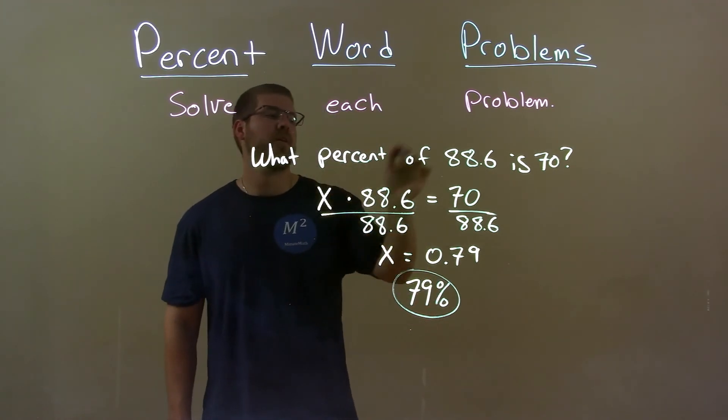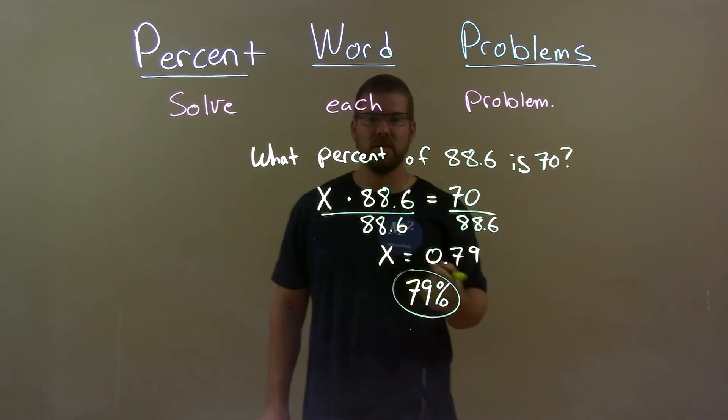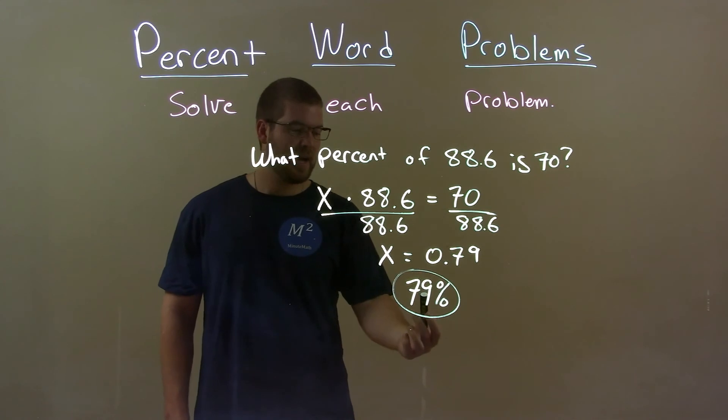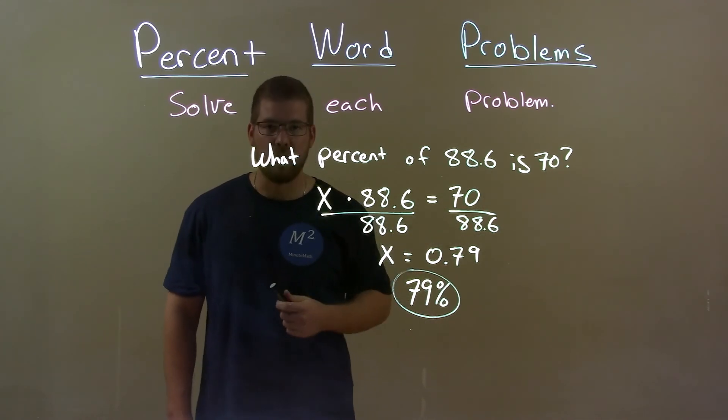So quick recap. We're given what percent of 88.6 is 70? Well, we wrote that as an equation, then solved for x, and converted that decimal back to a percent. So the final answer again is 79% of 88.6 is 70.